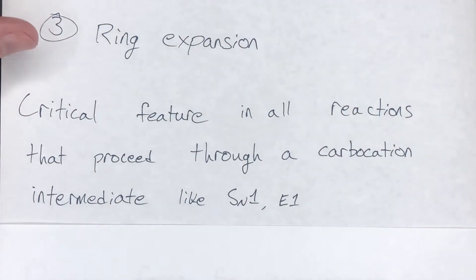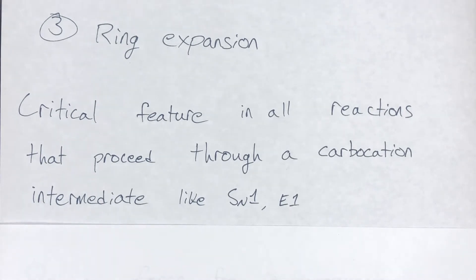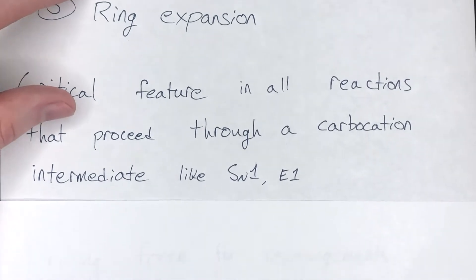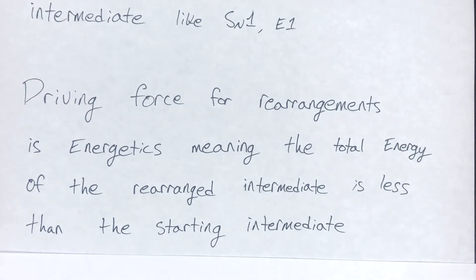Why do we care about any of this? Carbocation rearrangements are very important anytime you're forming a carbocation intermediate. You have to keep an eye out for any possible rearrangements, because if there is a more stable carbocation intermediate that can form, it will form, and that will dictate what your product is. You should always be aware of this especially in an SN1 reaction, E1 reaction, or electrophilic addition — anything where you're forming a carbocation. The main driving force for all rearrangements is energetics, meaning the rearranged intermediate has lower energy than the starting material.